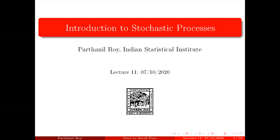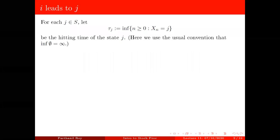So last time we introduced this notion i leads to j and the goal was to come up with a decomposition of the state space that helps us to understand the evolution of the Markov chain. So let's recall the definition.